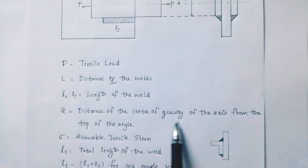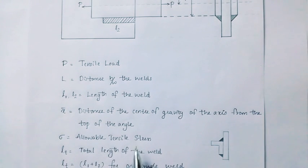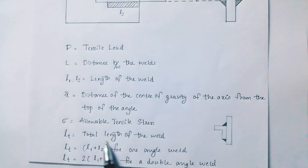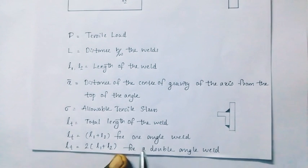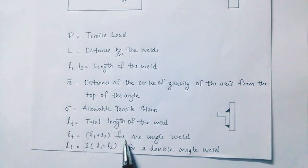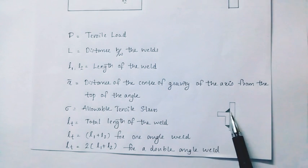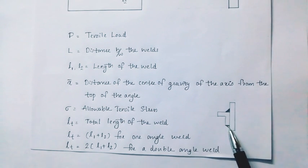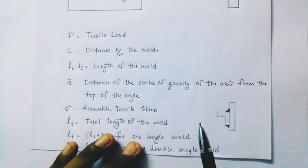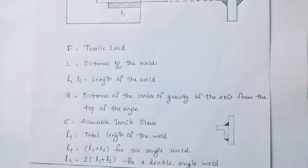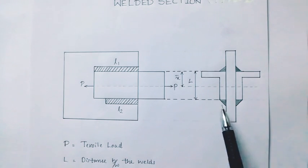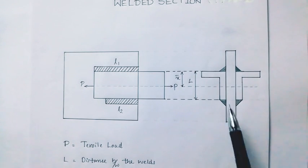x-bar is the distance of the center of gravity of the axis from the top of the angle. Sigma is equal to allowable tensile stress. Lt is equal to total length of the weld. For one angle weld, Lt is equal to L1 plus L2. For a double angle, Lt is also equal to L1 plus L2.